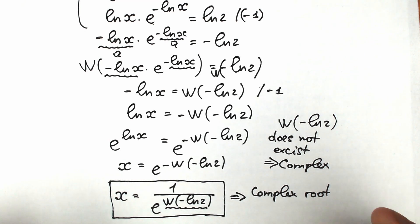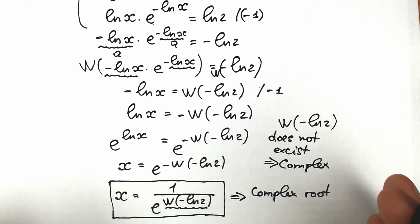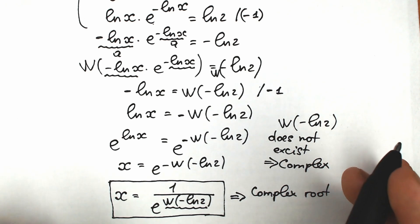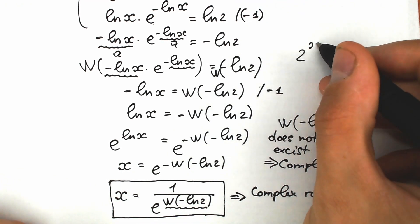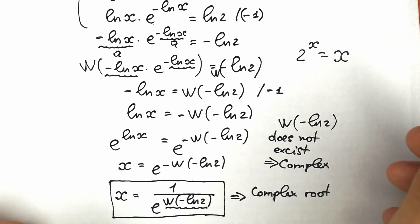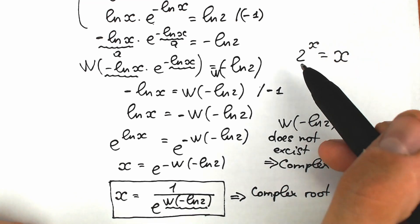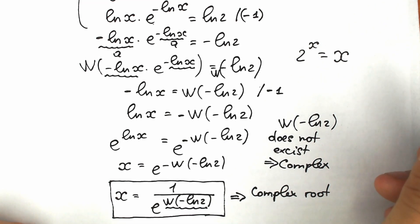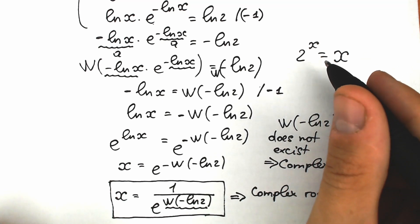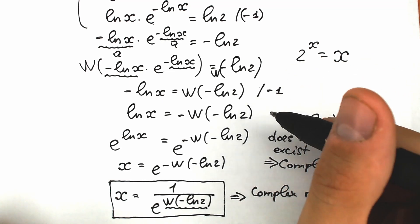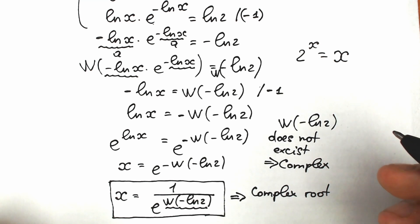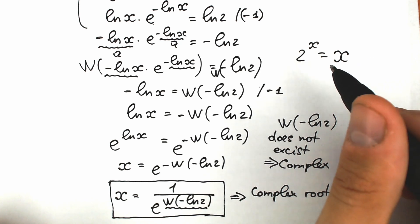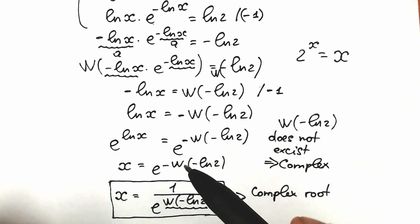I hope you understand this explanation. Write your thoughts in the comment section — maybe you have a faster method, it would be really interesting to read. A lot of students might think 2 to the power x equals x is easy, but as you can see we need to know about the Lambert W function. There is no way to solve this challenge without the Lambert W function, and there are a lot of really tricky natural log manipulations involved.